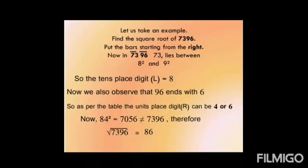Now let us take an example — the number 7396. It's a 4-digit number and we need to find its square root. First, put bars from the extreme right: 96 comes under one bar and 73 under the second bar. We take the number 73, which lies between the square of 8 (64) and the square of 9 (81). We take the lower number, so the tens place digit is 8.